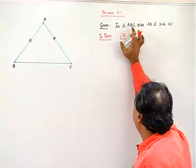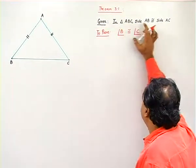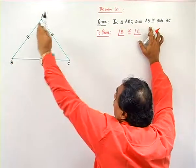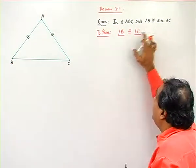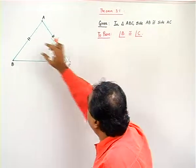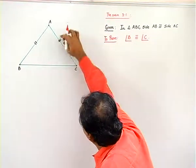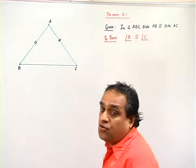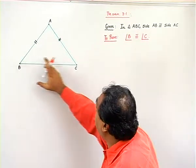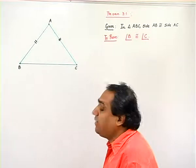Given, in triangle ABC, side AB is congruent to side AC. To prove that the angles opposite to these sides are also congruent. That means we have to prove that this angle B is congruent to angle C.